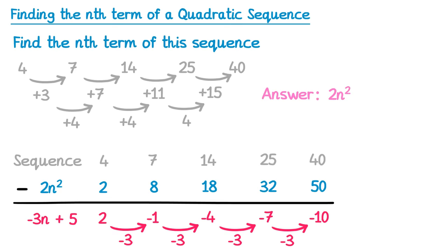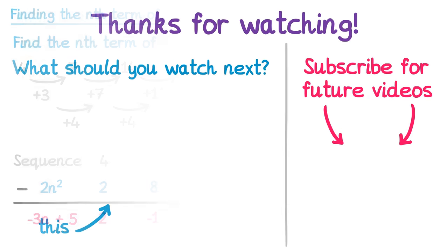We can then bring the two parts of the sequence together. The quadratic part was 2n squared, but the linear part was minus 3n plus 5. And that's our nth term. Thank you for watching this video, I hope you found it useful. Check out what I think you should watch next, and also subscribe so you don't miss out on future uploads.